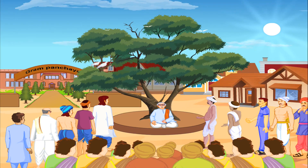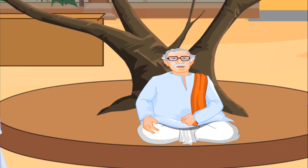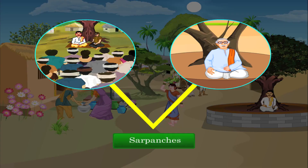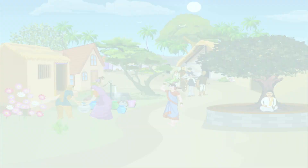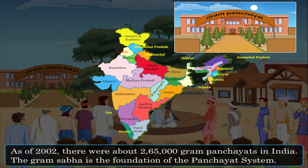In the previous module we learned that our government is organized at various levels. In this module we will learn about the government at local levels in the villages. Gram panchayats are local self-governments at the village or small town level in India, and the sarpanch is in charge of it. The sarpanchas are chosen from the village only, as they can best understand the needs of the villagers and can put it across the higher forums. These panchayats are set up to provide democracy at the village level, enabling ordinary villagers to participate in public affairs. As of 2002, there were about two lakh sixty-five thousand gram panchayats in India.